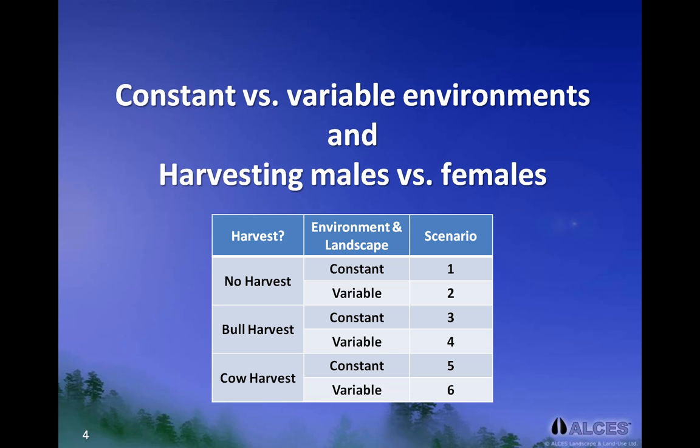The model runs we will review are based on two important factors that may affect moose harvesting strategies. One, whether the environment and landscape, including the habitat, are highly variable or constant, and two, whether the harvest selects males versus females. To appreciate the relative effects that environmental variability and sex ratio of the harvest may have on sustainable harvesting strategies, we will review six scenarios, or six separate combinations, of the two factors as summarized in this table.